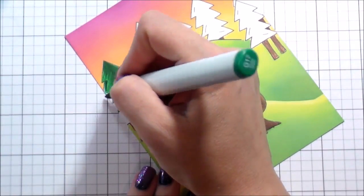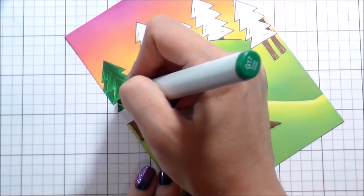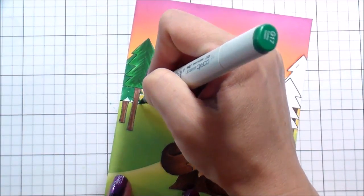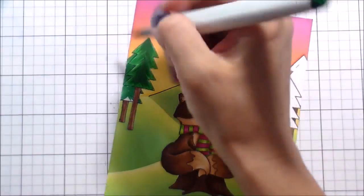For the tree that is falling behind it, I'm not even going to use the G05. I'm just going to use the G17 and the G28 because it is behind. It would be darker. You would see less detail on that.